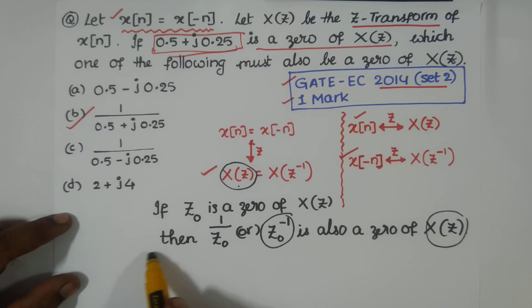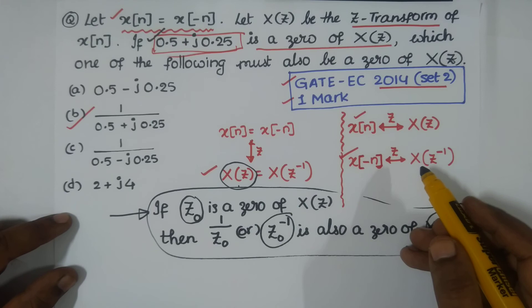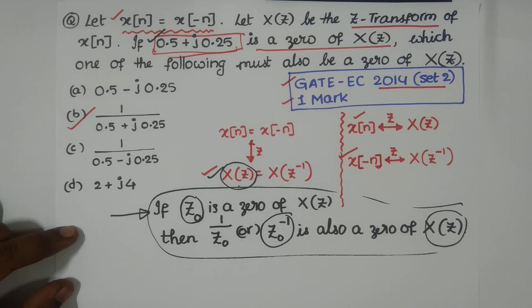In place of Z_0, we have this complex zero. If 0.5 + j0.25 is a zero of X(Z), then obviously 1/Z_0 or Z_0 inverse is also a zero of X(Z). Therefore, without second thought, you have this.